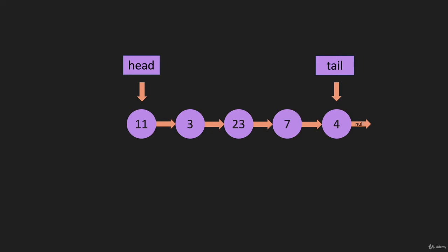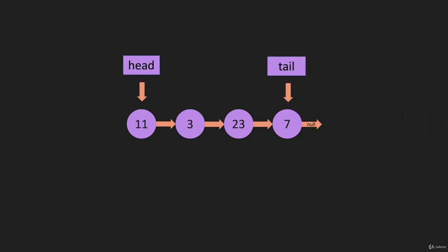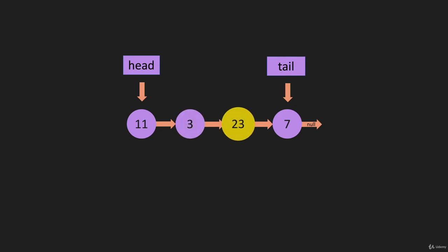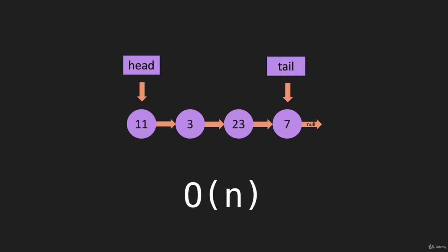Now let's look at removing that item. It looks like we just do those steps in reverse — take it off, move tail over, and we're done. But the problem is that in order to have this pointer point to the seven node, we have to set it equal to something pointing to the seven node, and the only pointer pointing there is the previous one. We can't go backwards in a linked list, so we have to start at the head and iterate through the entire list to finally get to that pointer and set tail equal to it. Because we had to iterate through the entire list, popping something from the end of a linked list is O(n).